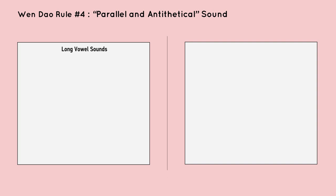Wen Dao, rule four. Parallel and antithetical sound. Modern Slavic English and Classical Chinese are roughly split between long and short vowel sounds. Long vowel sounds are words that end in a vowel.